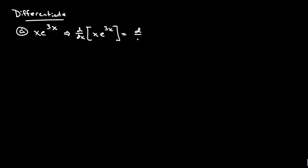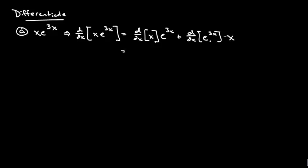This is equal to the derivative of the first times the second, plus the derivative of the second times the first. From the last video we already know what the derivative of this guy is. I'll go ahead and work it out again just in case you didn't watch that. So d/dx of x is one, so we just have e to the 3x for this guy.